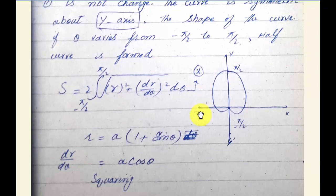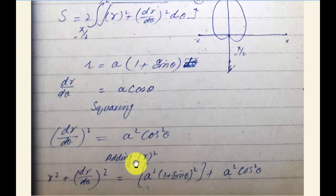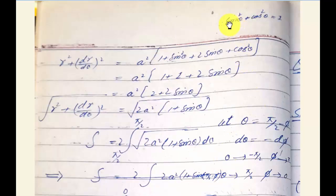Here we have r = a(1 + sin θ), so dr/dθ = a cos θ. Squaring: (dr/dθ)² = a² cos² θ. Now we compute r² + (dr/dθ)².